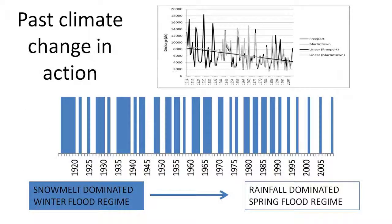This is an example of non-stationarity of past data. If you look at the barcode graph, the blue color indicates snowmelt-dominated with winter flow regime, while the white color is rainfall-dominated regime. You can see climate change in action — the hydrologic regime change in the last 100 years, which creates a special problem for hydrologists and statisticians to address.